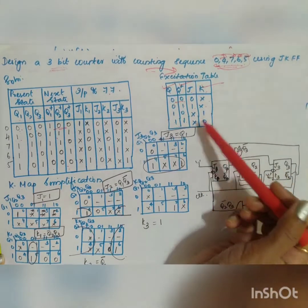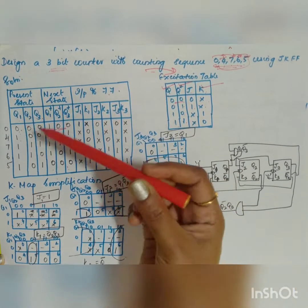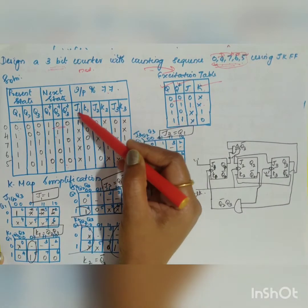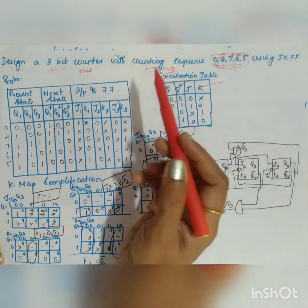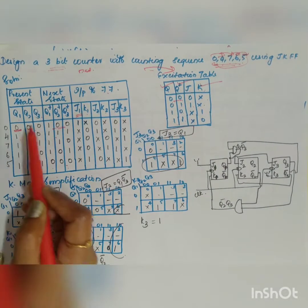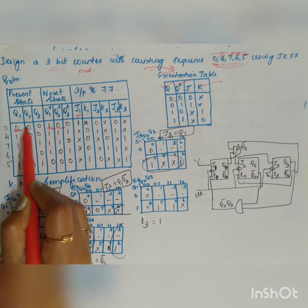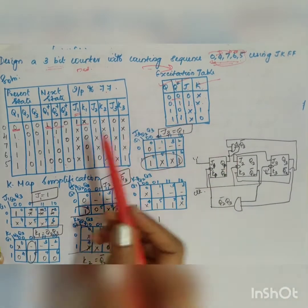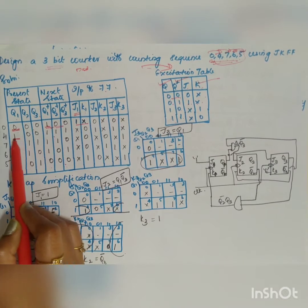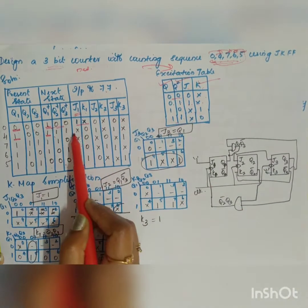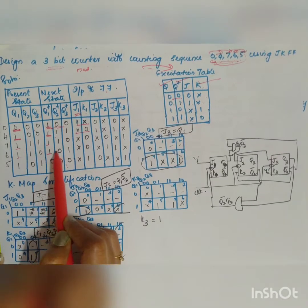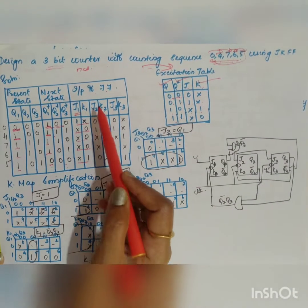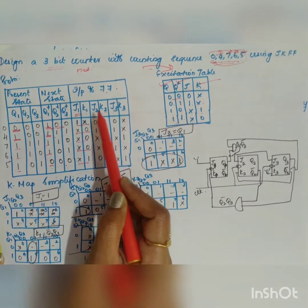Since n = 3, there are 3 flip-flops, so we need to find J1K1, J2K2, and J3K3. For J1K1, compare Q1 (present) and Q1+ (next). Q1 goes 0→1, so J1K1 = 1x. Then 1→1 gives x0, x0, x0, and 1→0 gives x1.